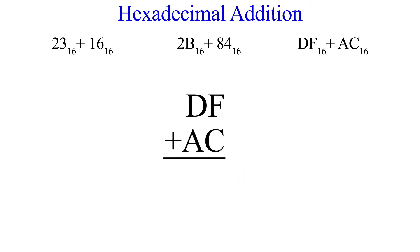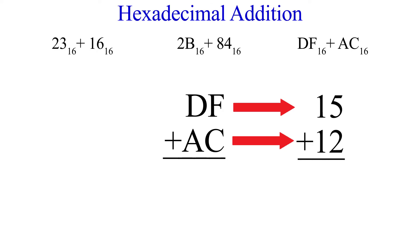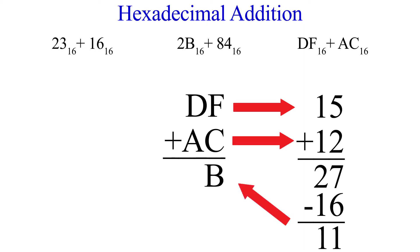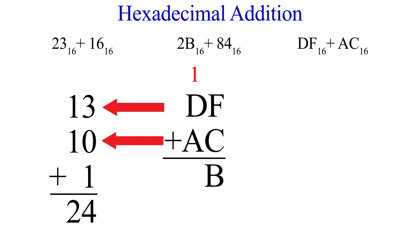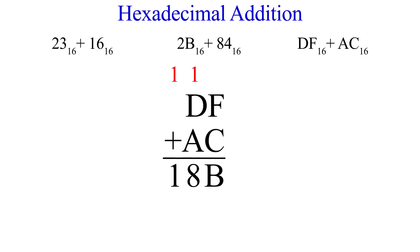Now the third example, DF plus AC, requires a carry. Convert F and C to decimal: that's 15 and 12. Adding them gives 27, which is greater than 15, so we carry. We subtract 16 from 27 to get 11, which is B, and carry a 1. Now D plus A plus 1 converts to 13 plus 10 plus 1 equals 24. Subtract 16 to get 8 in the 16s place, carry the 1 — final answer is 1AB.